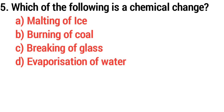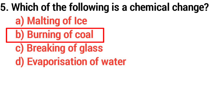Q5. Which of the following is a chemical change? Answer, option B: Burning of coal.